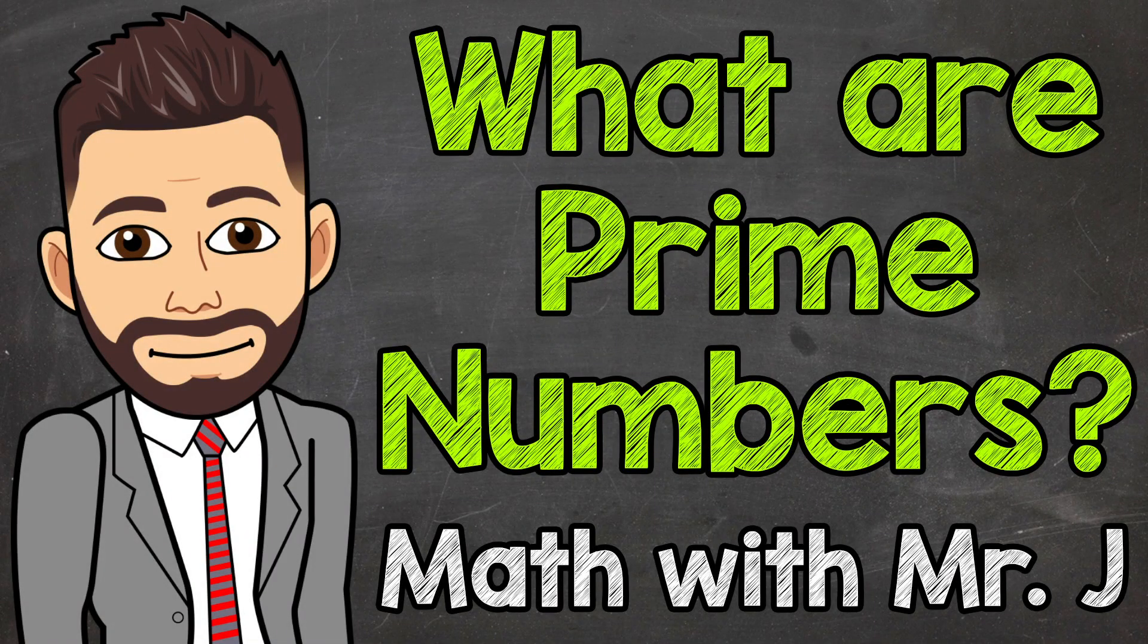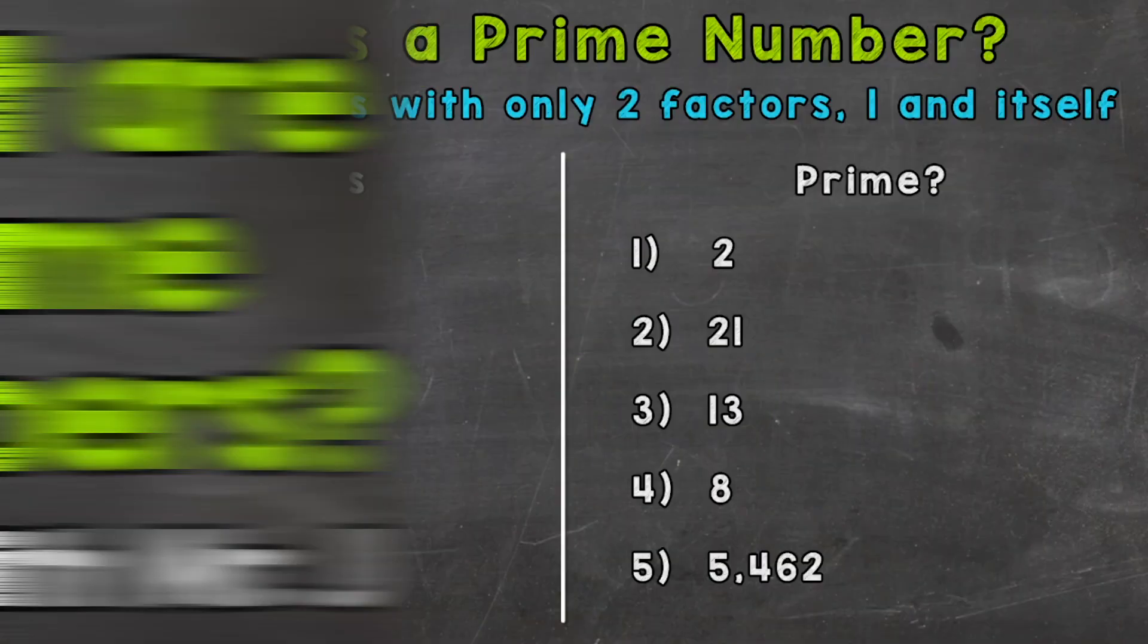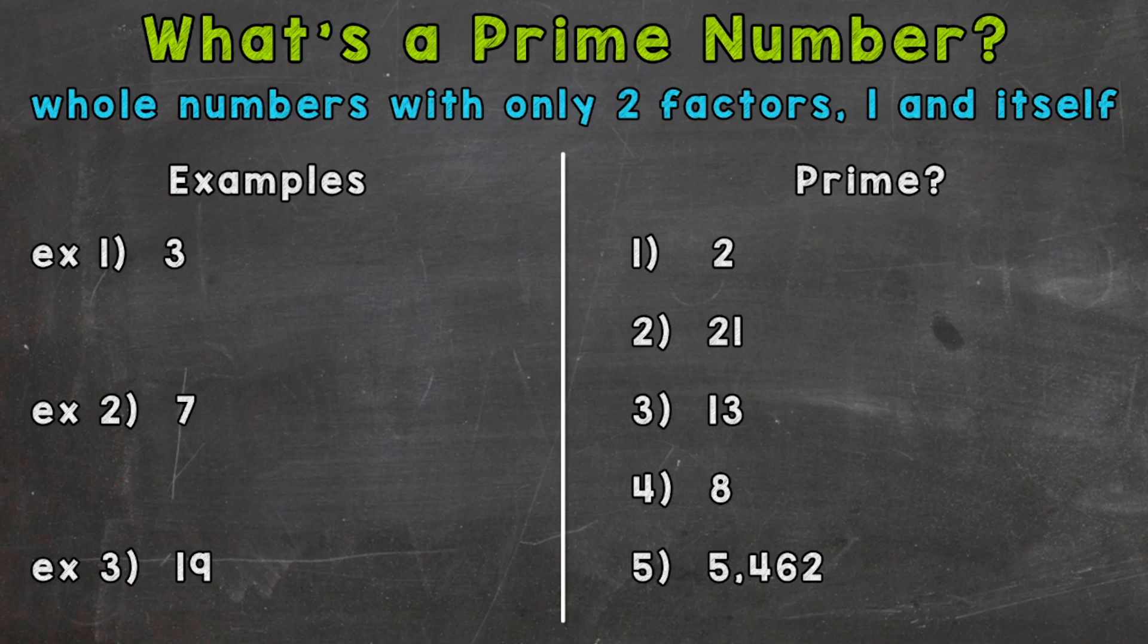Welcome to Math with Mr. J. In this video, I'm going to cover what prime numbers are. Prime numbers are whole numbers with only two factors, one and the number itself. We're going to go through a few examples of prime numbers to better understand that, and then take a look at five other numbers and determine if they are prime or not prime.